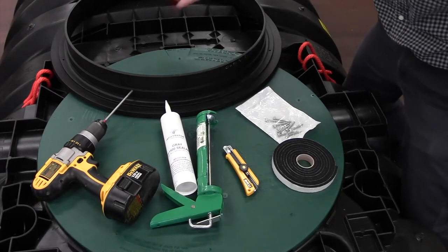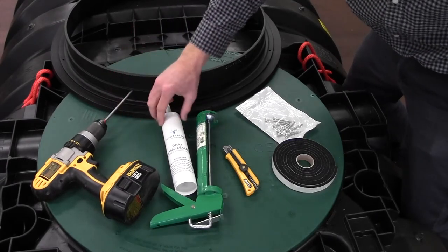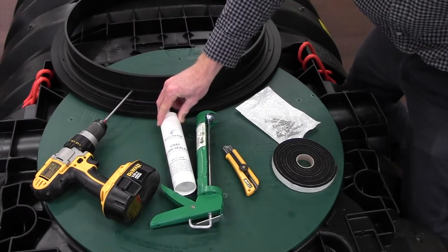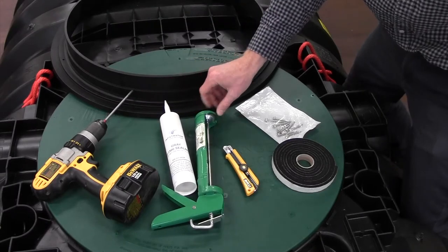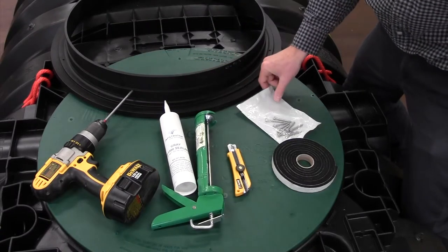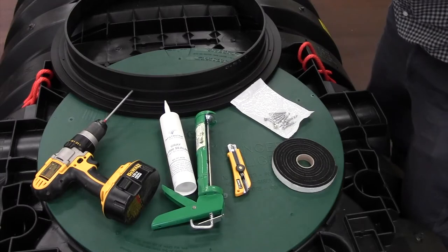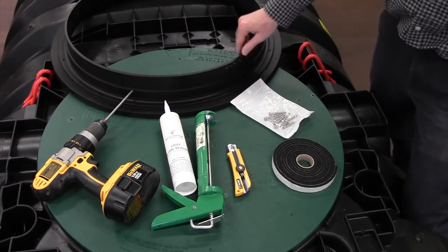Before you begin, the things you'll need are a screw gun, ISI-1500 sealant, a caulk gun, a razor knife, number 14 inch and a half stainless steel screws, the adhesive back gasket, and the pipe adapter ring.